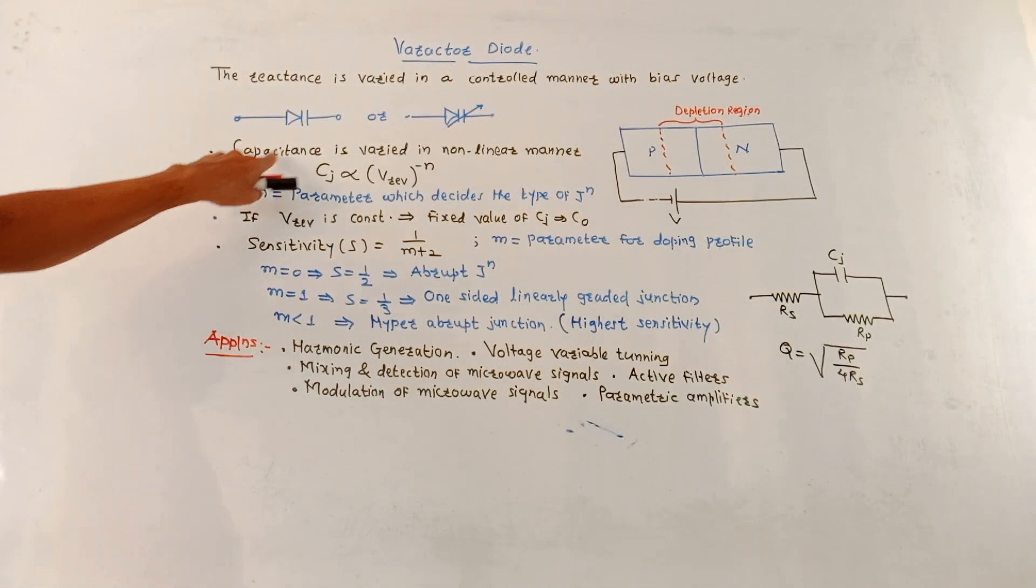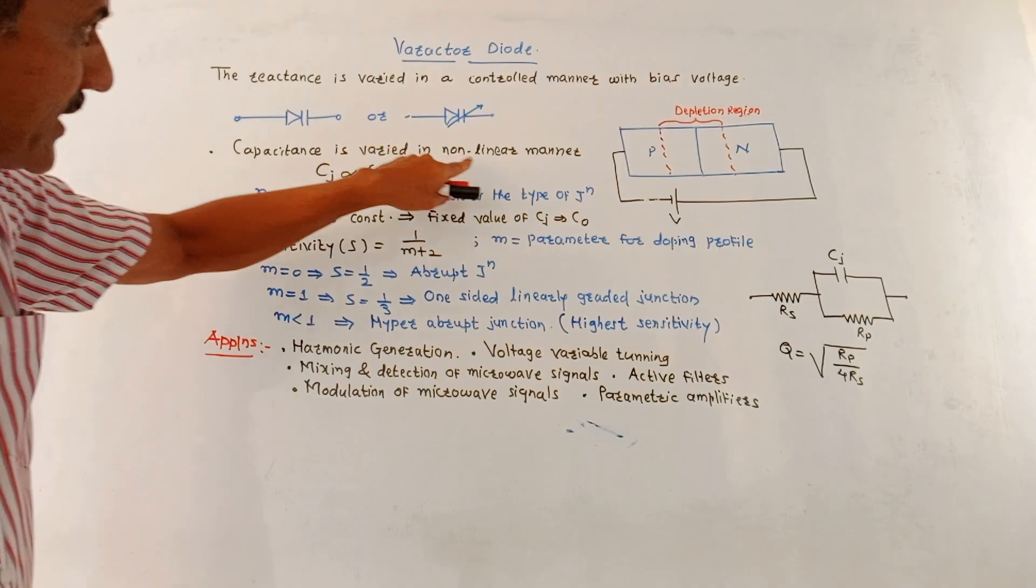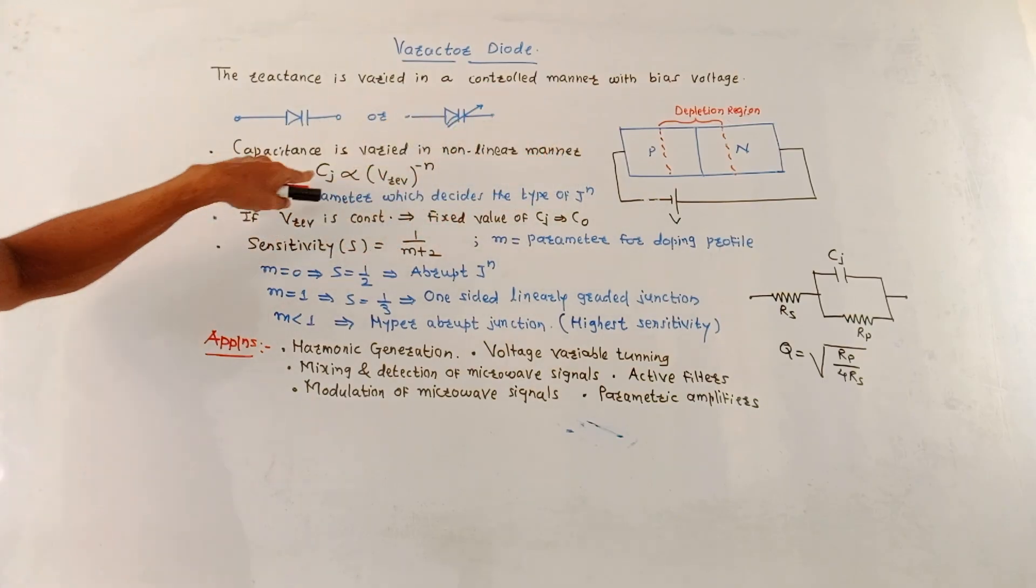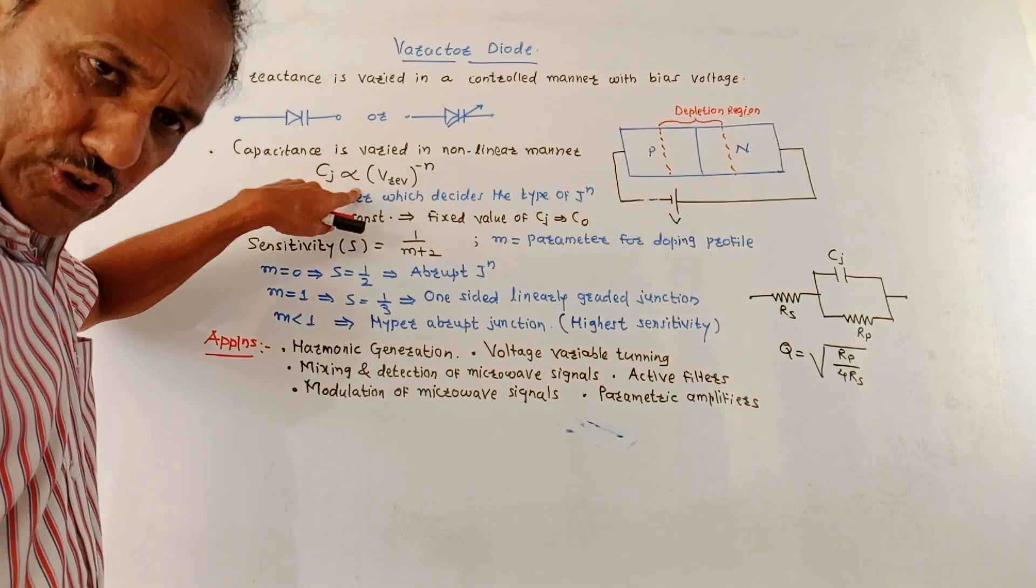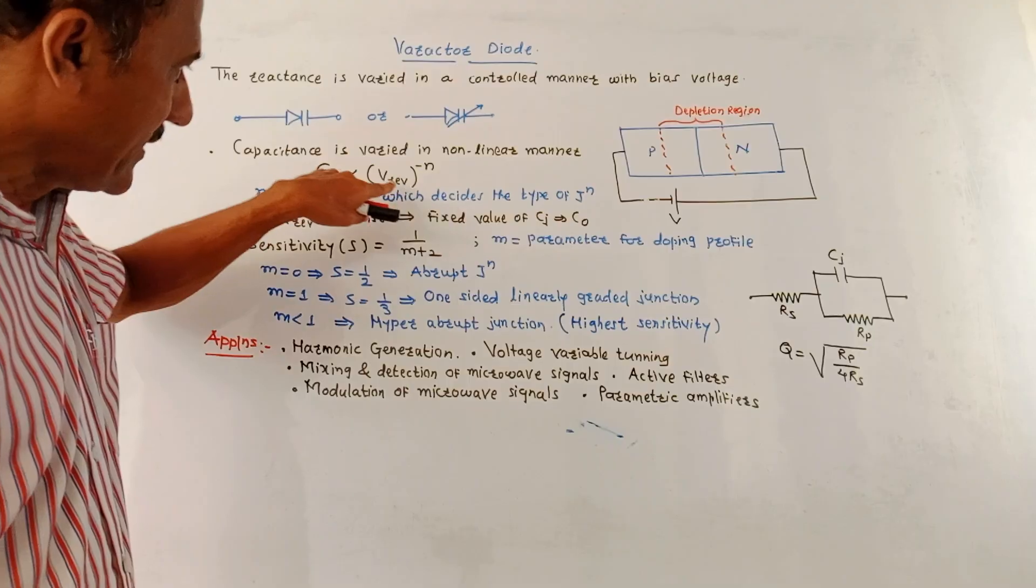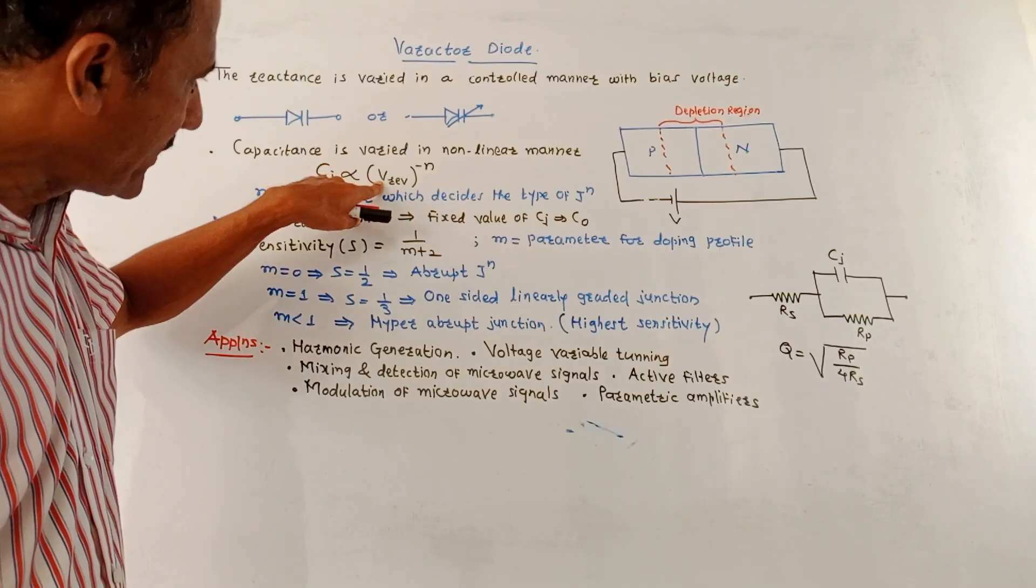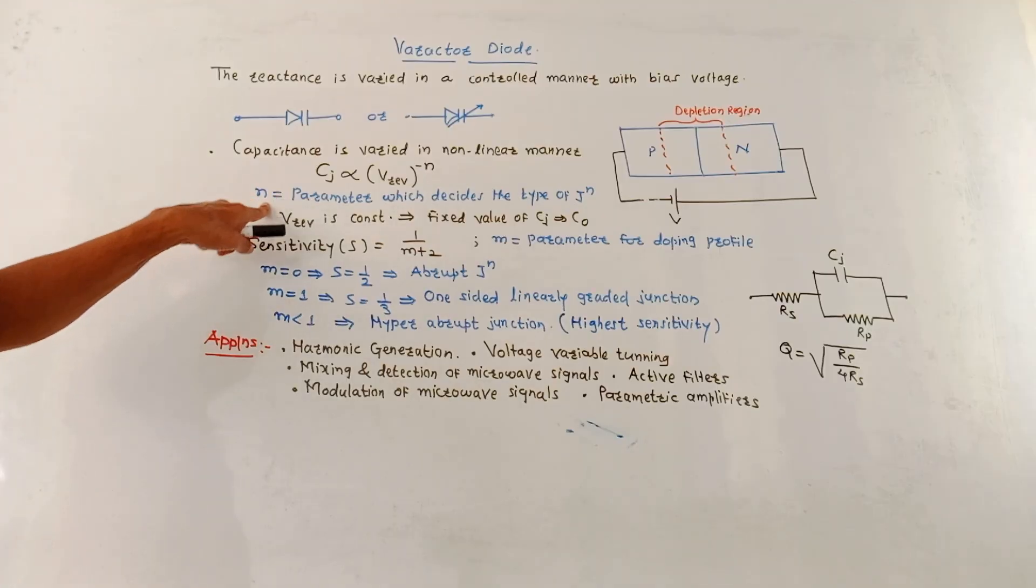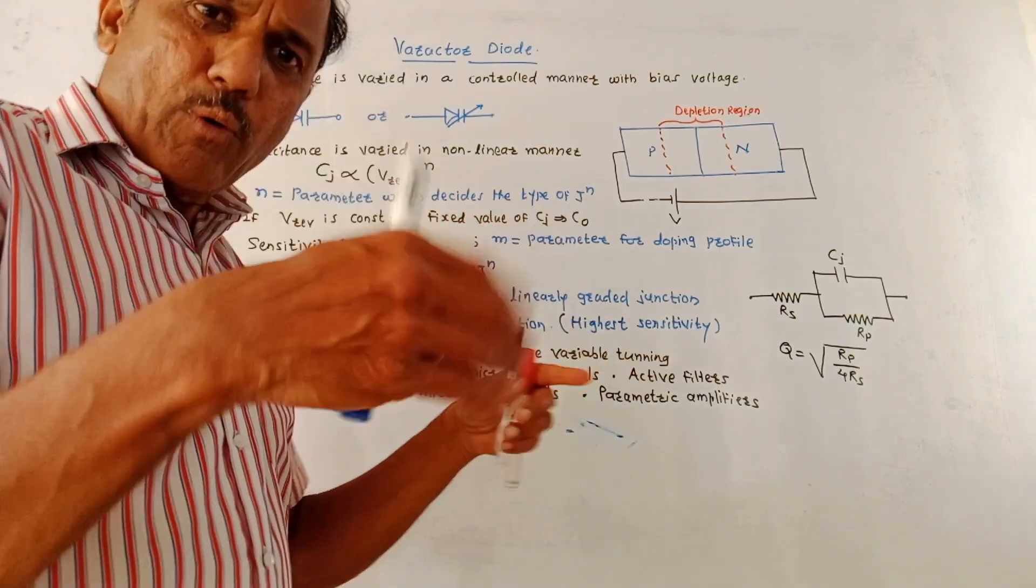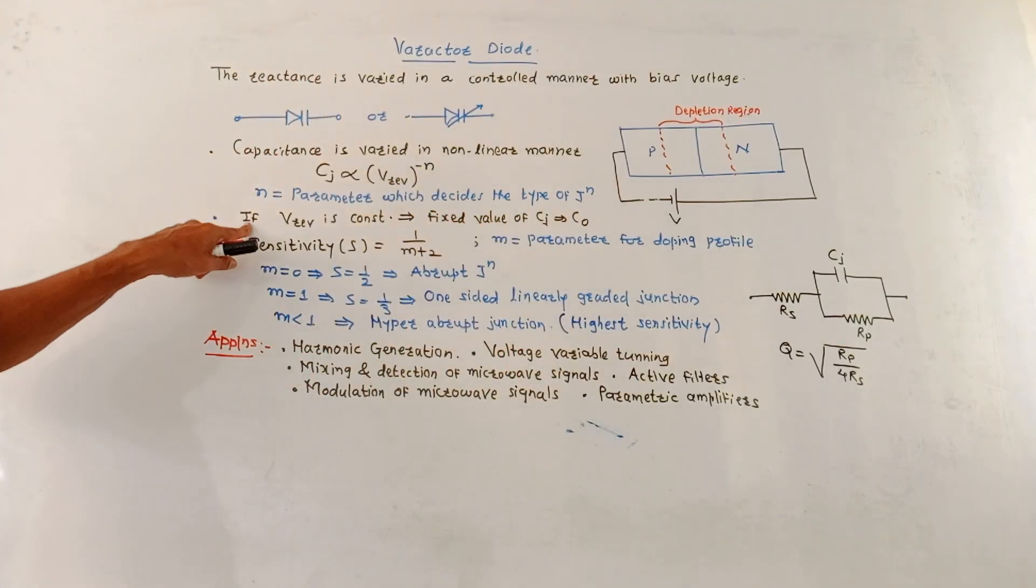In this case, the capacitance is varied in a non-linear manner. This is given by the formula Cj, where j stands for junction. Junction capacitance is proportional to VREV, that is applied reverse voltage, raised to minus N. This parameter N decides the type of junction used.